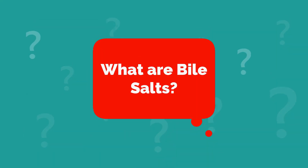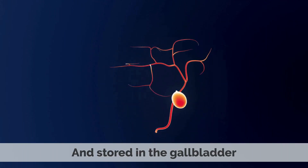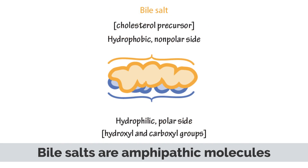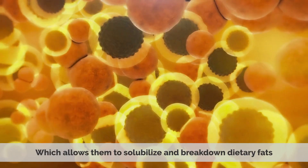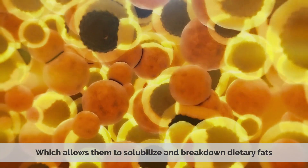Bile salts are a type of molecules found in the bile produced by the liver and stored in the gallbladder. Bile salts are composed of sodium, potassium, and chloride ions with some bile acids. Bile salts are amphipathic molecules, meaning they have hydrophilic and lipophilic properties, which allows them to solubilize and break down dietary fats.